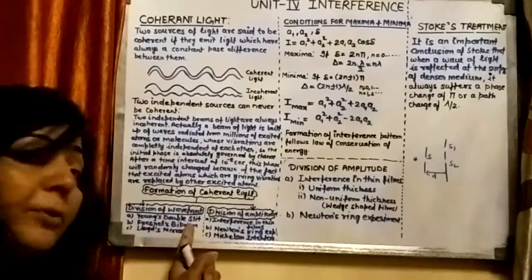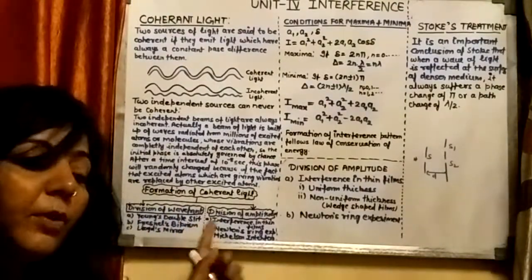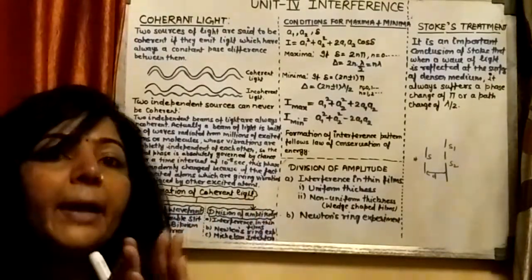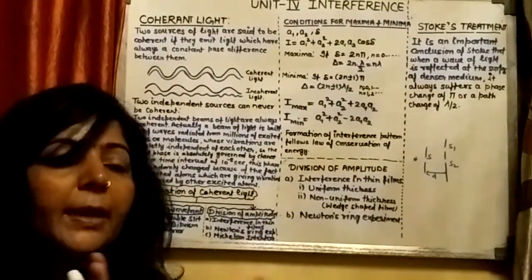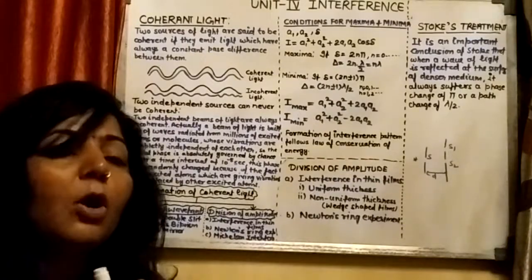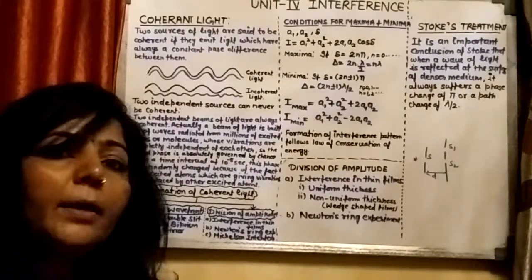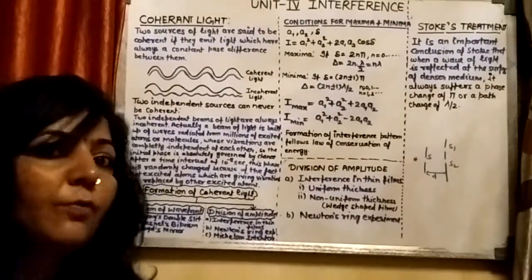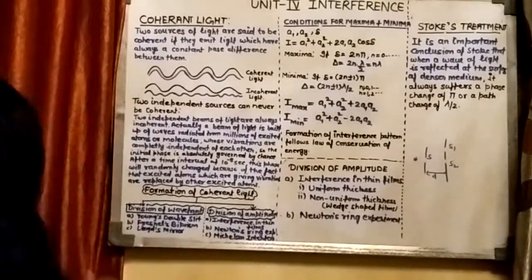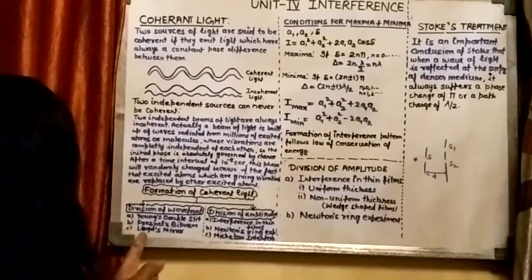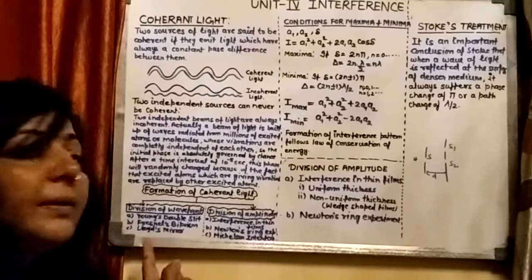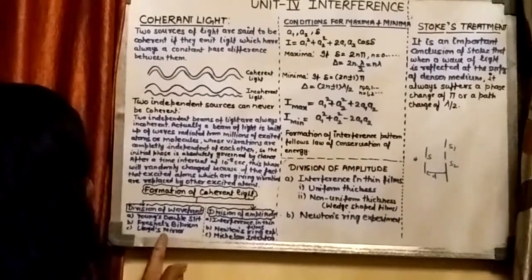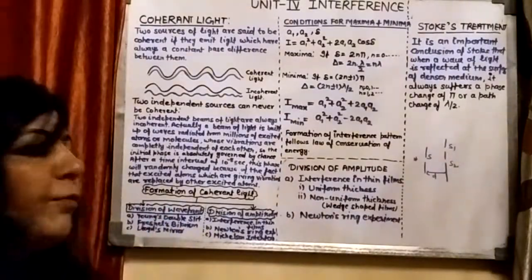Fresnel's biprism experiment — where two prisms are combined — is another example where, by division of wavefront, you get coherent light. Lloyd's mirror method is also an example of division of wavefront.